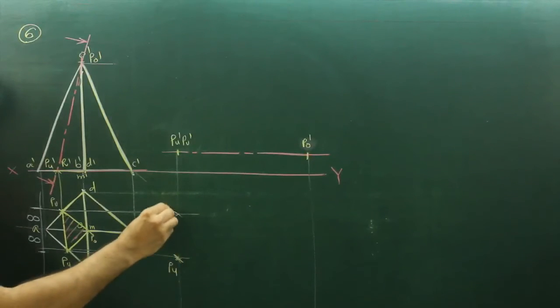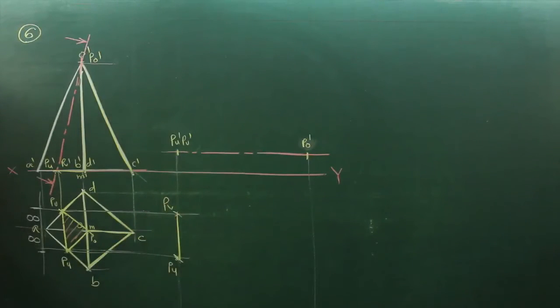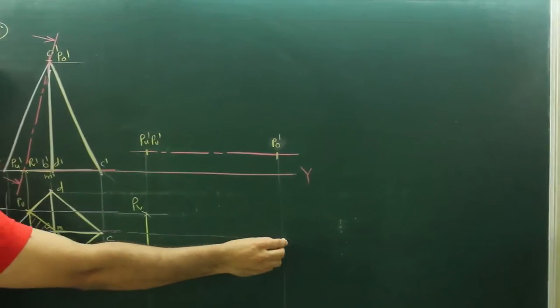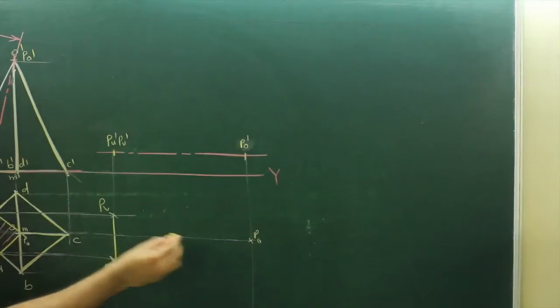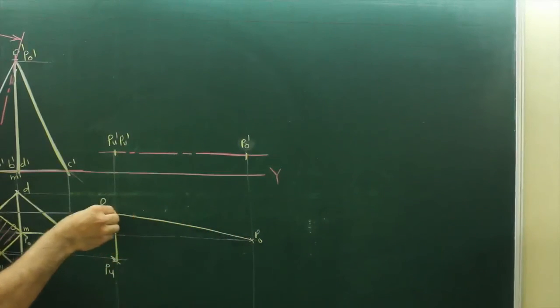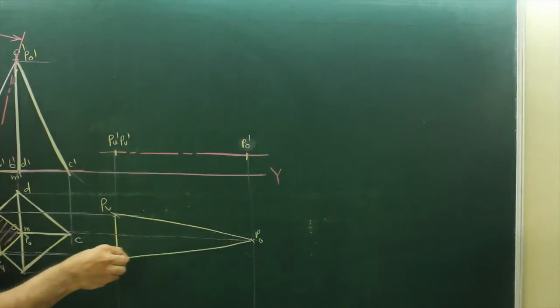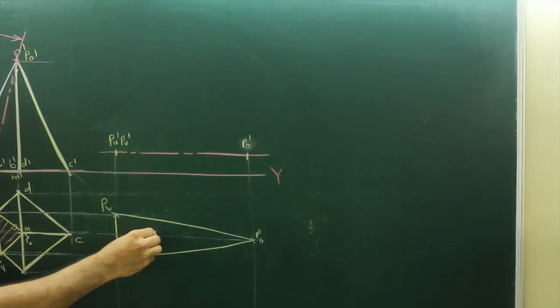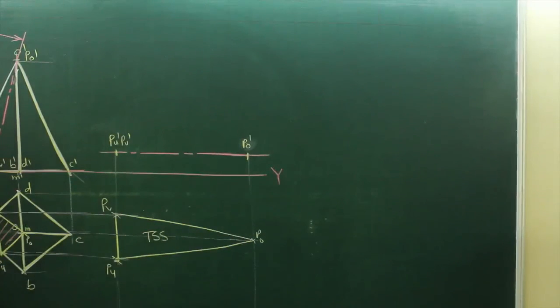Then we will extend PV as well as PU. So this is PU, PV. Same way we will extend PO. Wherever it will intersect that is point PO. Then we will join this. So we make this TSS. True sectional shape.